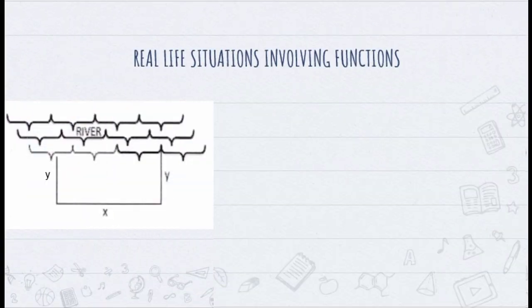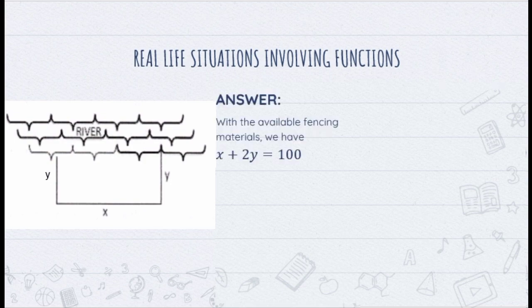This is the figure of the rectangular area. As you can see, I have placed Y on the other side because a rectangle has opposite sides that are equal. We have to fence three sides with the available 100 meters of fencing material, so we have X plus 2Y equals 100.